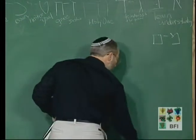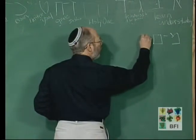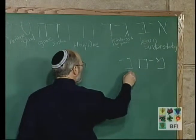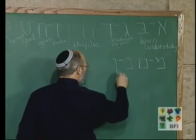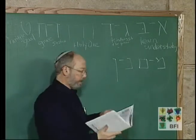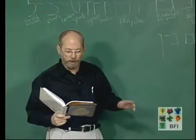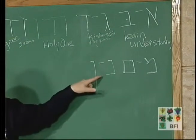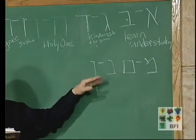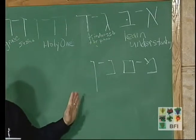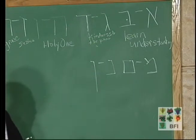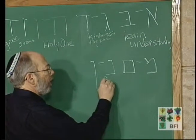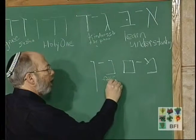The next letter is Nun. It also has a final form — this is the regular form and this is the final form. They ask: what does the Nun come to teach us? The first form is bent, and this one is a straight Nun. That a faithful person — a faithful person, which they get from the word neman, meaning faithful — if a faithful person is humble, is bent, then he will become an erect, standing faithful person in the world to come.